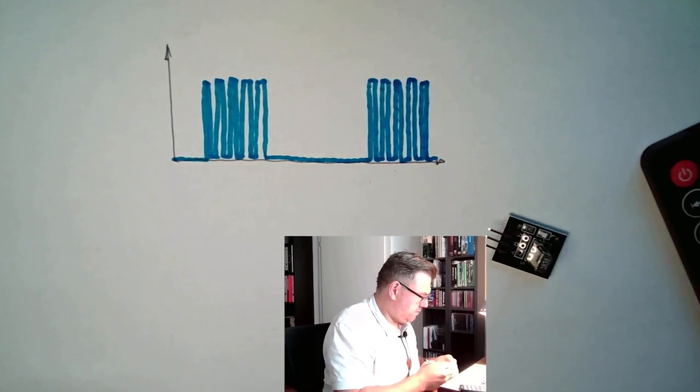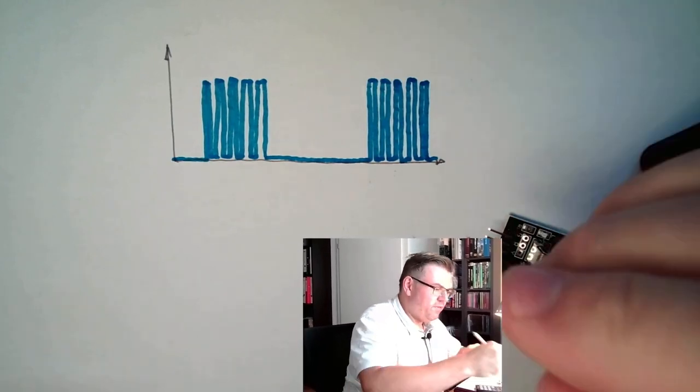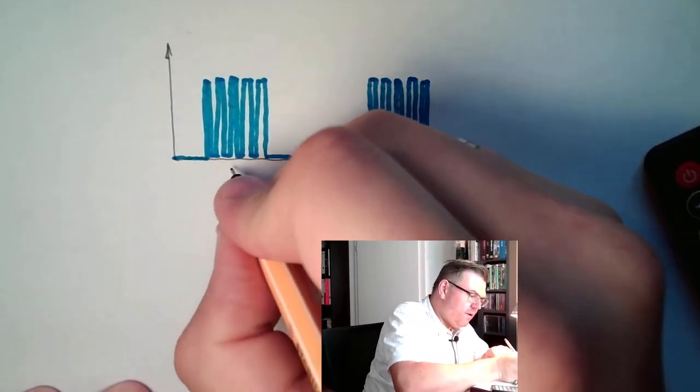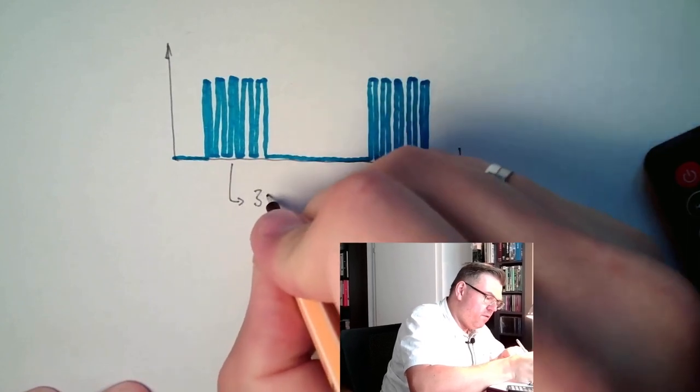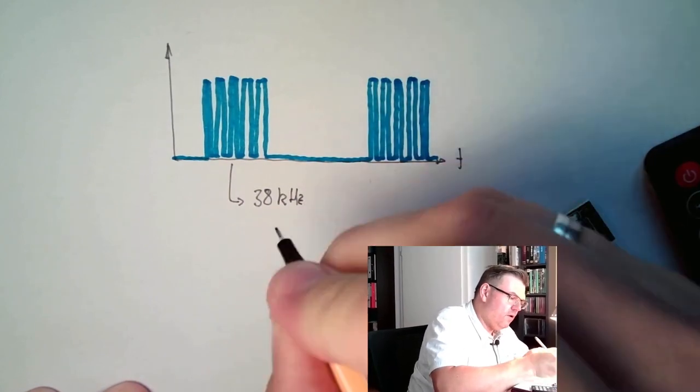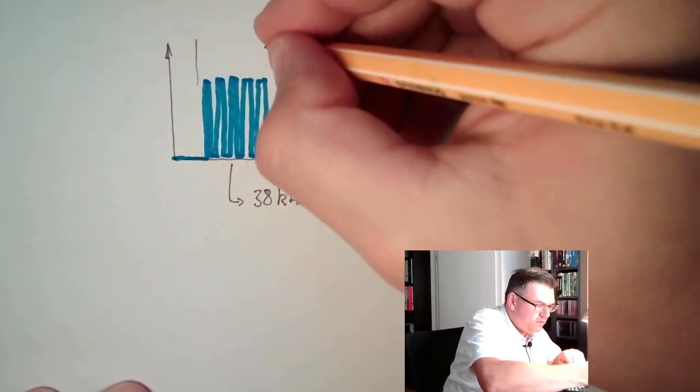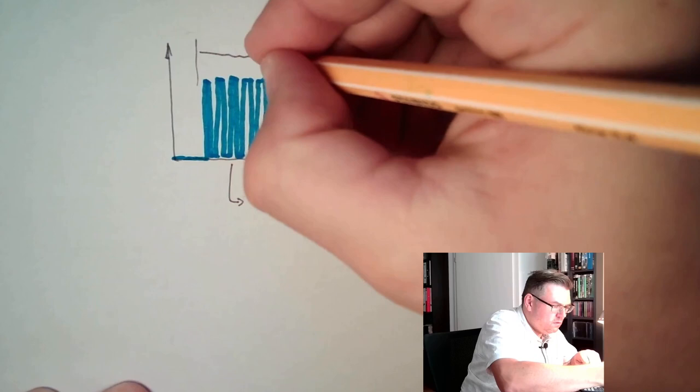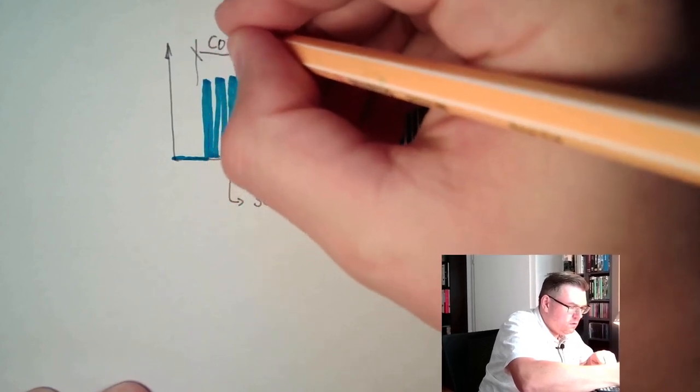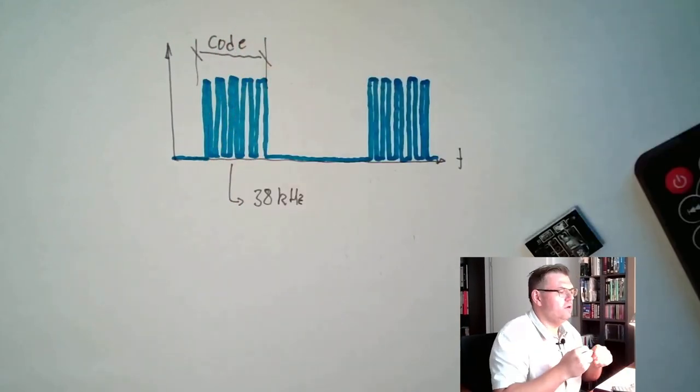So this is the time t. And this is the light. Here we have 38 kilohertz. And here the length of these pulses.